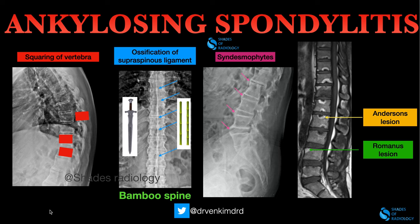Today I am going to show you the classic imaging features of ankylosing spondylitis on X-ray and MRI. The first imaging finding I am going to show is the squaring of the vertebra. Usually the vertebra are not of square shape, but you can see here the vertebra are completely squared up.